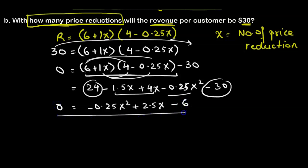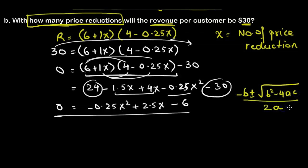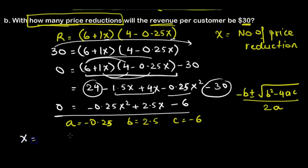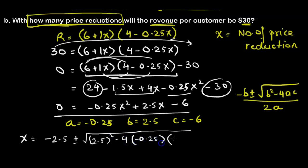This is a standard form quadratic equation with x appearing twice. Since the equation equals zero, we apply the quadratic formula: x equals negative b plus or minus square root of b squared minus 4ac, all divided by 2a. Here a is negative 0.25, b is 2.5, and c is negative 6. We substitute these values into the quadratic formula to solve for x.